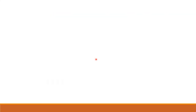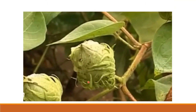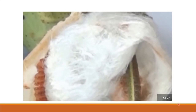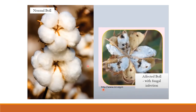A normal boll and an affected boll can be compared — in the affected boll there is a hole through which the larva enters and eats up the internal tissue. When infected bolls are opened, multiple larvae of different stages from 1 mm to 1 cm in length are found inside. The affected ball opens earlier than normal and as a result catches fungal infection, and you can see the staining caused by the fungal infection.